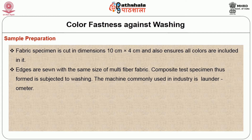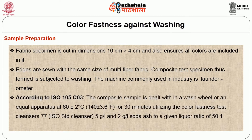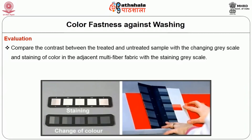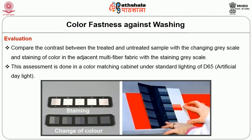The machine commonly used in industry is the laundrometer. As per ISO 105 C03 standard, the composite sample is treated in a wash wheel or equivalent apparatus at 60 ± 2°C for 30 minutes, using colorfastness test cleansers following ISO 77 standards at a composition of 5 g/L and 2 g/L soda ash to a liquor ratio of 50:1. At the end, the temperature is reduced and the woven fabric is washed with chilled water and then dried. Evaluation: compare the contrast between the treated and untreated sample with the changing grayscale, and compare staining of colour in the adjacent multifiber fabric with the staining grayscale prescribed by ISO. This assessment is done in a colour matching cabinet under standard lighting of D65, usually artificial daylight.